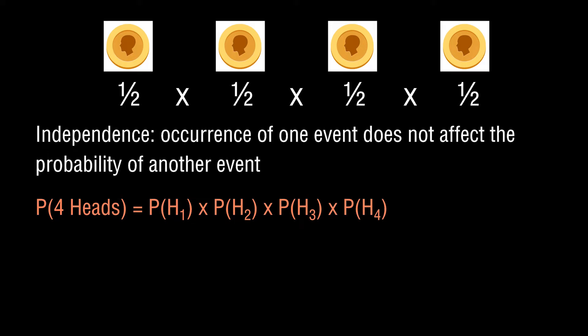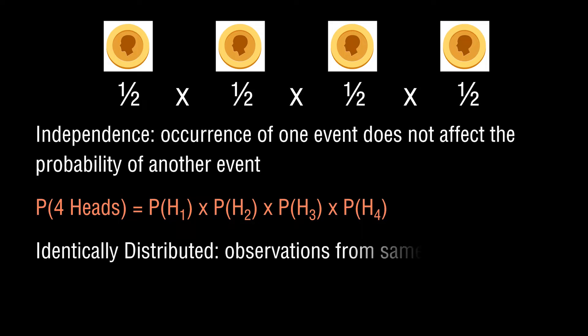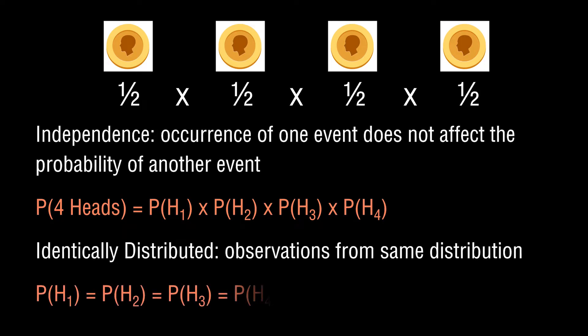The second assumption you've made is that these observations are coming from the exact same distribution — we refer to this as being identically distributed. So the probability of getting heads on the first toss is exactly the same as on the second toss, the same on the third, and the same on the fourth.